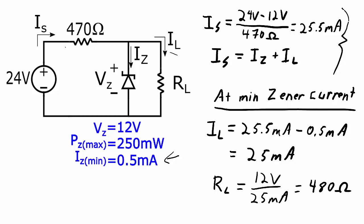If that load resistance drops lower than 480 ohms, IL will increase, which is pulling more from the 25.5 milliamps that the source can provide. Therefore, the diode is going to drop out of regulation. As soon as the diode drops out of regulation, we no longer have VZ across RL. So we basically will have a voltage divider circuit between this 470 ohm resistor and the RL. And the zener diode doesn't have much effect on the circuit anymore.